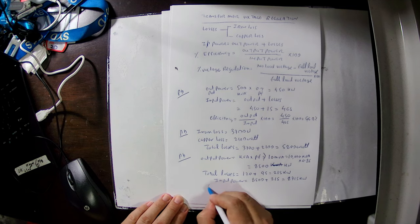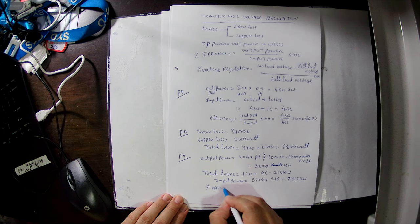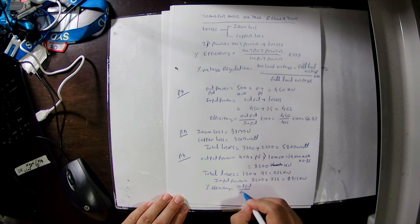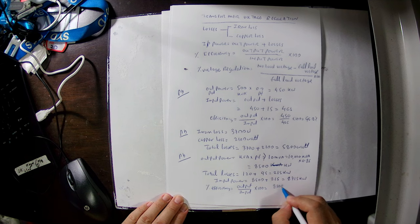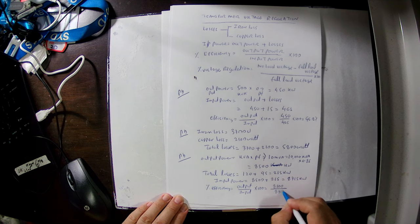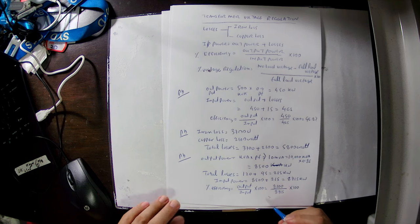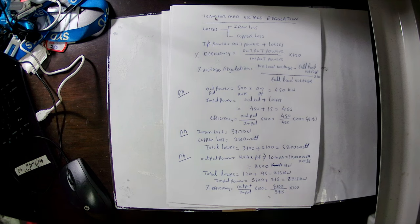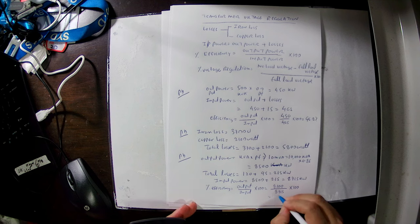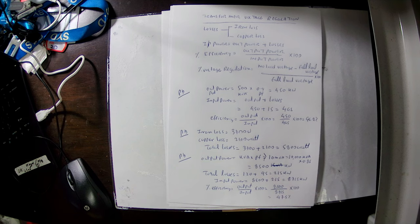Then we calculate percentage efficiency: output divided by input multiplied by 100. Output is 8500, input is 8715. Therefore efficiency equals 8500 divided by 8715 multiplied by 100, giving 97.5%. This is the way we calculate transformer efficiency.